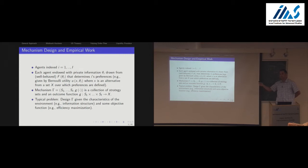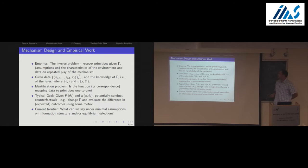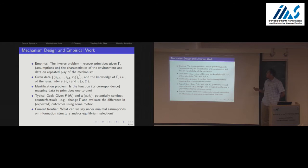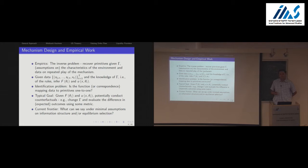That's the key distinction between market design and mechanism design: in market design we might not have a clear objective function to maximize, whereas in mechanism design we are explicit about that. In empirical work we do the inverse: given knowledge of gamma — like a second-price auction — and perhaps given assumptions on the environment such as symmetric equilibrium, IID signals, we have data on repeated play of the same mechanism, and we're interested in recovering F or U.